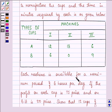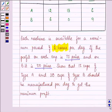Each machine is available for a maximum period of six hours per day. If the profit on each cup is 75 paisa and on B is 50 paisa, show that 15 cups of type A and 30 cups of type B should be manufactured per day to get the maximum profit.